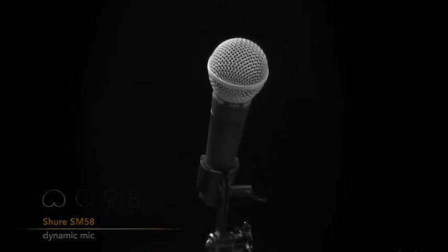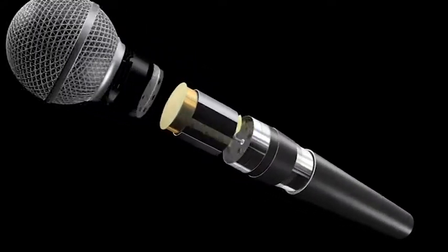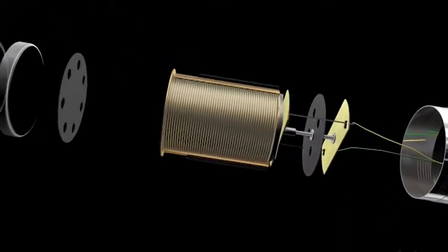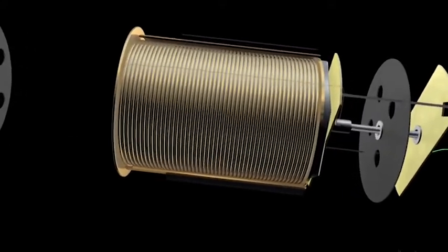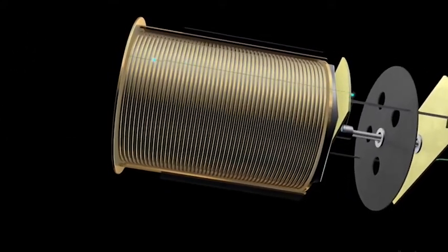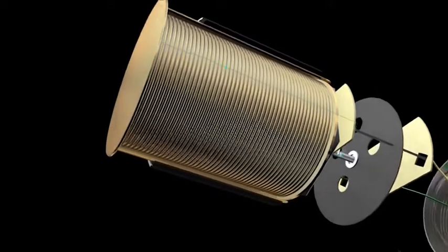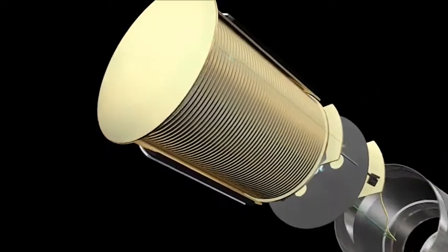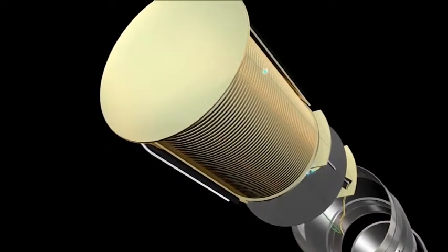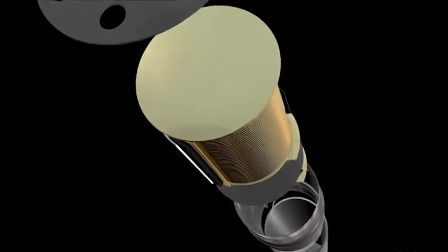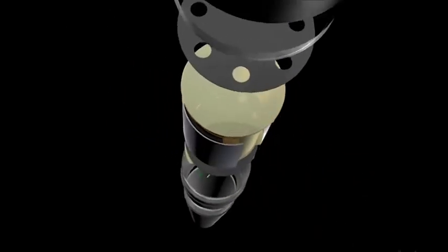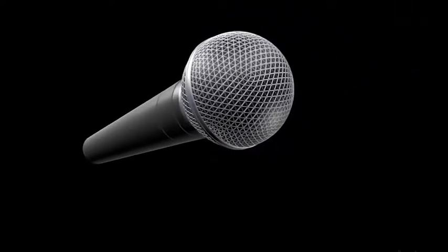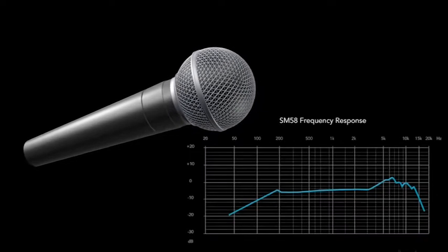A dynamic microphone gets its name from the fact that the sound waves cause movement of a thin metallic diaphragm and attached coil of wire that dynamically moves inside a permanent magnet to change acoustic energy into electronic energy. This construction gives a dynamic mic its robustness.